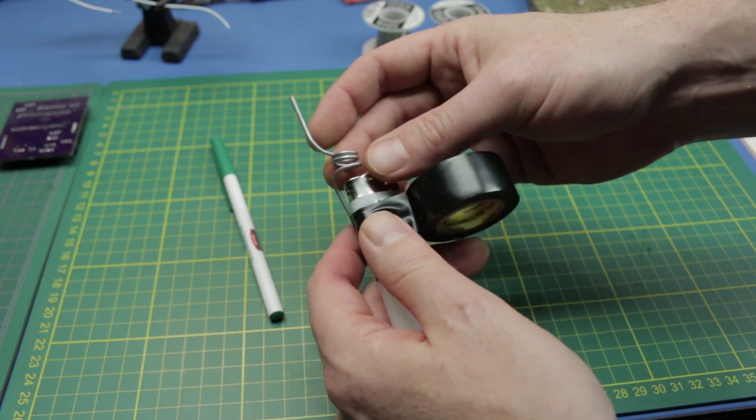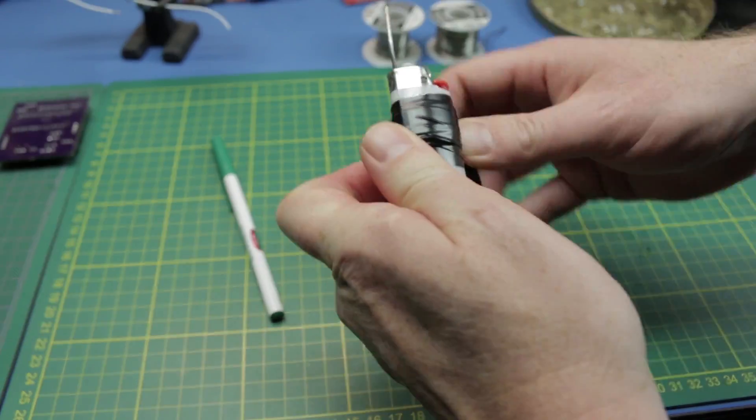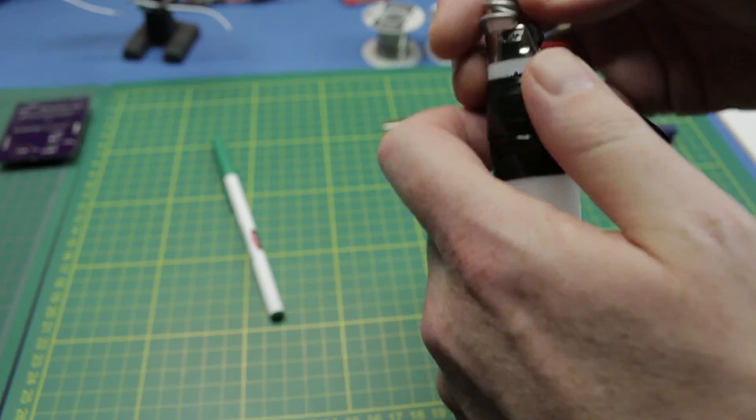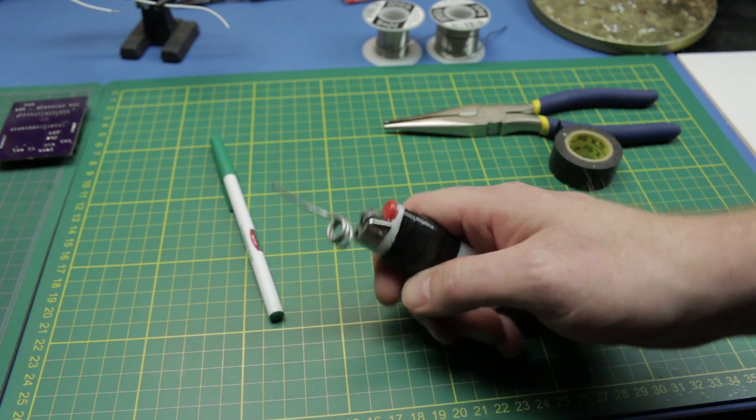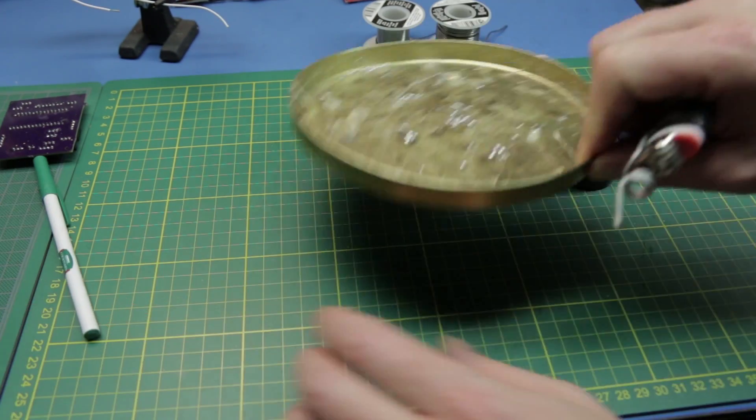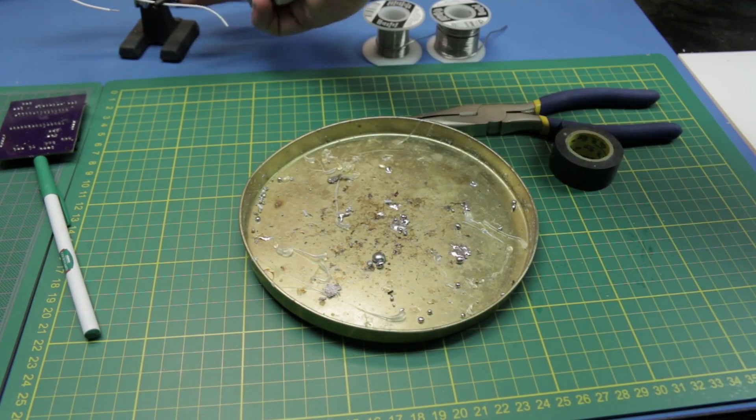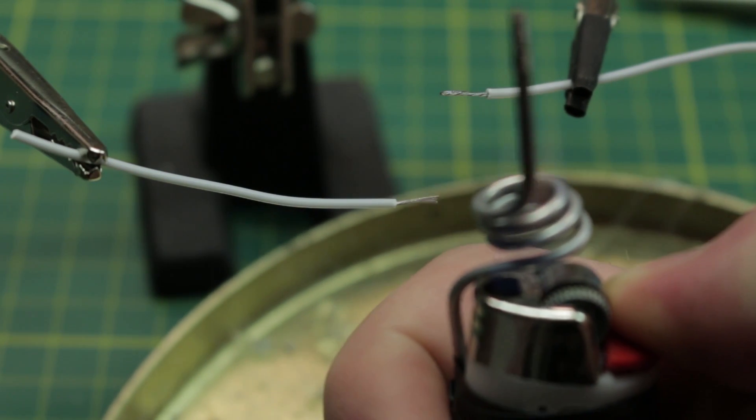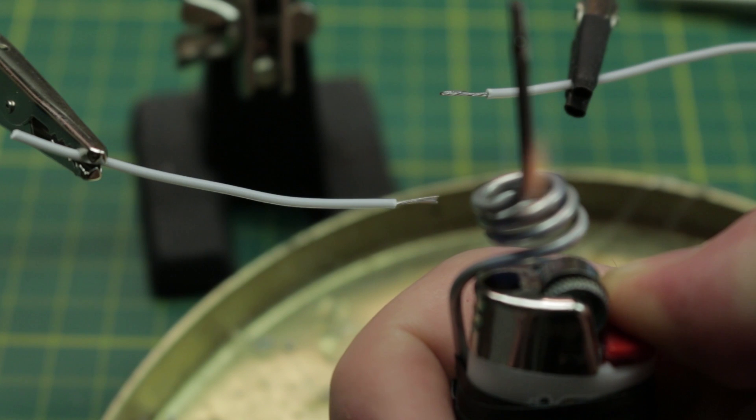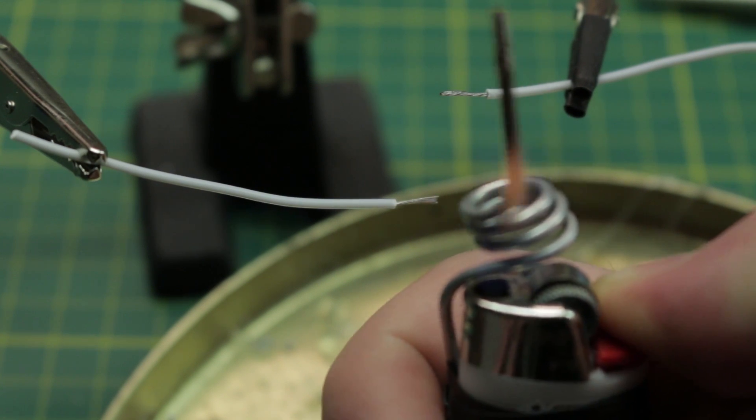Get this into position here. We have a field expedient solder iron. Looks like hell but I can attest I've used this in the bush. We just let that coil warm up on there and we are going to be good to go and ready to solder momentarily.